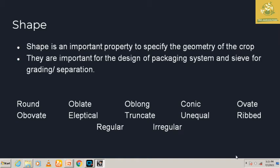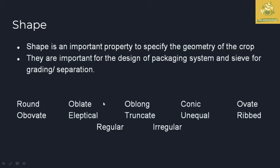Shape is an important property to specify the geometry of the crop. The most important packaging designs, as well as grading and separation processes, are described mainly by the shape of the particle. The different shapes studied in agriculture properties are: round, oblate, oblong, conic, ovate, regular, and irregular forms.